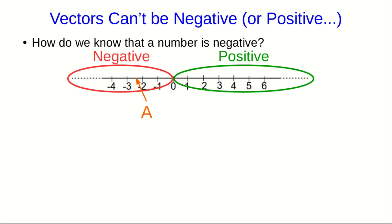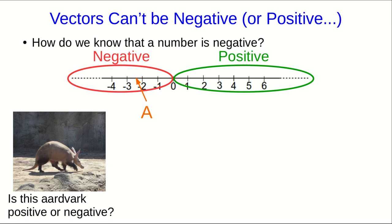Okay, so now I'm going to ask a similar question. Is this aardvark positive or negative? Well, hopefully you're saying, that's ridiculous, Jeff. Aardvarks don't live on number lines, they live on brushlands and savannas of Africa. And so we have no way of deciding whether an aardvark is positive or negative. And so it's a totally meaningless question.